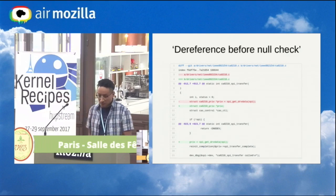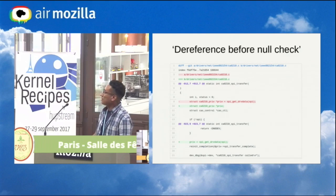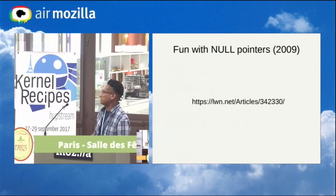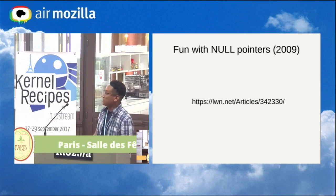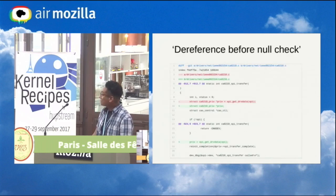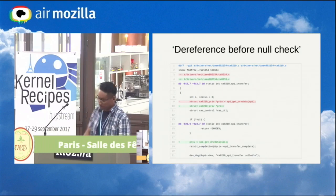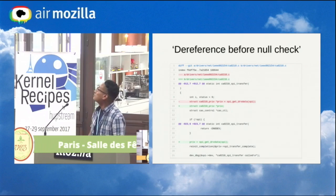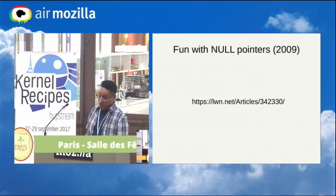The solution was simple. Doing some research, I ran into an interesting article. This was an issue reported in 2009 — a very similar case where an attacker could get access to root by exploiting this issue. So it is important to do some research every time we find this kind of potential null pointer dereference.